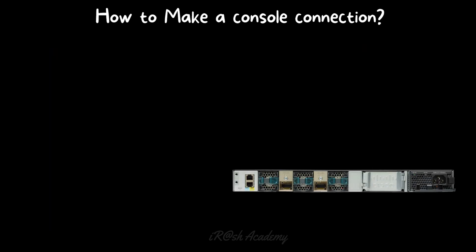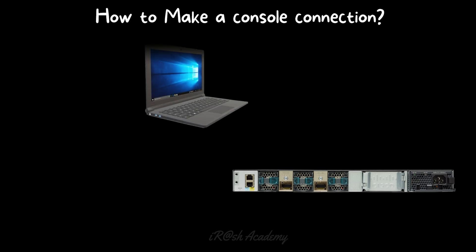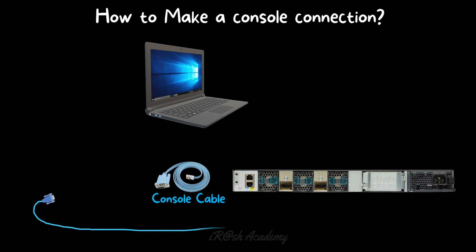Consider this is your network device — it may be a network switch, router, firewall, WLC, or anything — and this is your laptop that you are going to use to access the console window. As we said, you need a console cable. A console cable is a rollover cable used to get the console connection. In the console cable, one side is a serial interface and the other side is RJ45. The serial interface is also called DB9 — it has nine pin connectors. You need to connect the RJ45 connector to the console port of the network device.